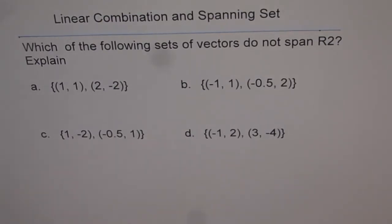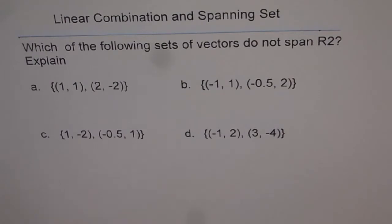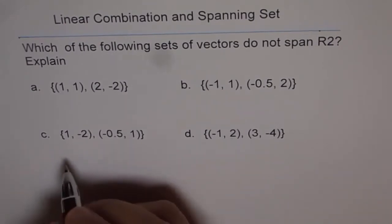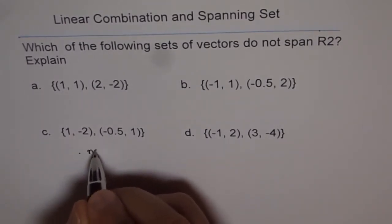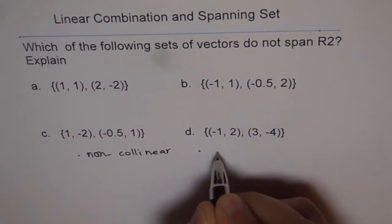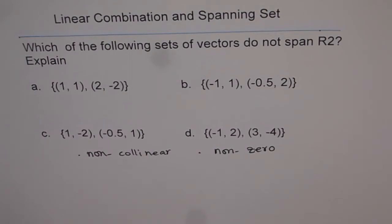Here's a question related to linear combination and spanning set: Which of the following sets of vectors do not span R2? Explain. We're given four options. The criteria for not spanning is that we're looking for something which is non-collinear and also non-zero. We're looking for a set in which both vectors are not collinear and either one should not be zero. Non-collinear means they should not be scalar multiples.